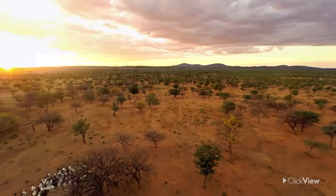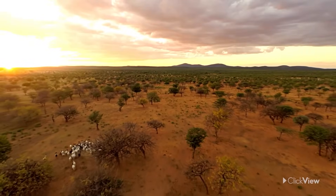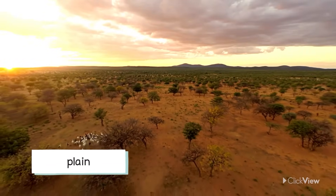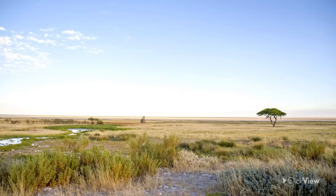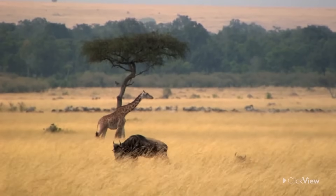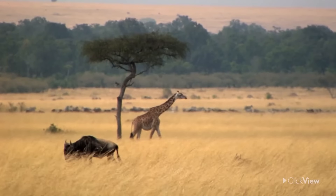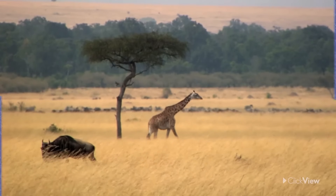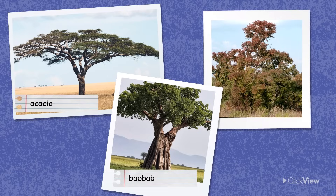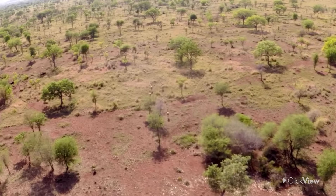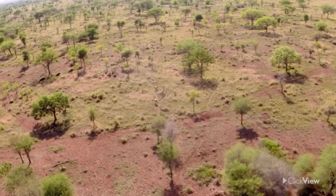A tropical savanna is a large area of land known as a plain. It is covered in grasses and scattered shrubs and trees, and is usually warm all year round. Trees which grow in an African savanna include the acacia, the baobab, and the bush willow. These are plants that don't need much water to survive.